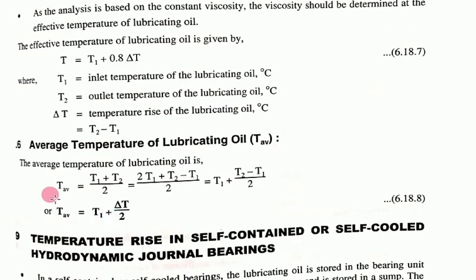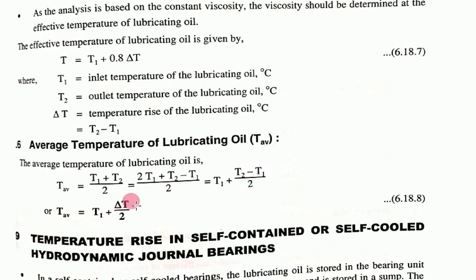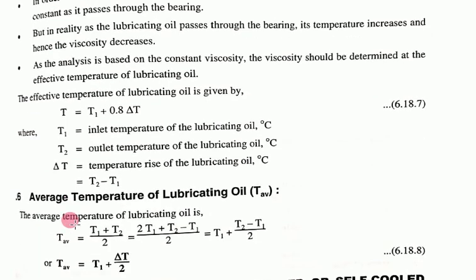Substituting into the average temperature formula: t_average equals (t1 plus t2) divided by 2. Simplifying gives t_average equals t1 plus delta t divided by 2. This completes today's derivation for temperature rise in hydrodynamic journal bearings. Examples will be covered in the next session.